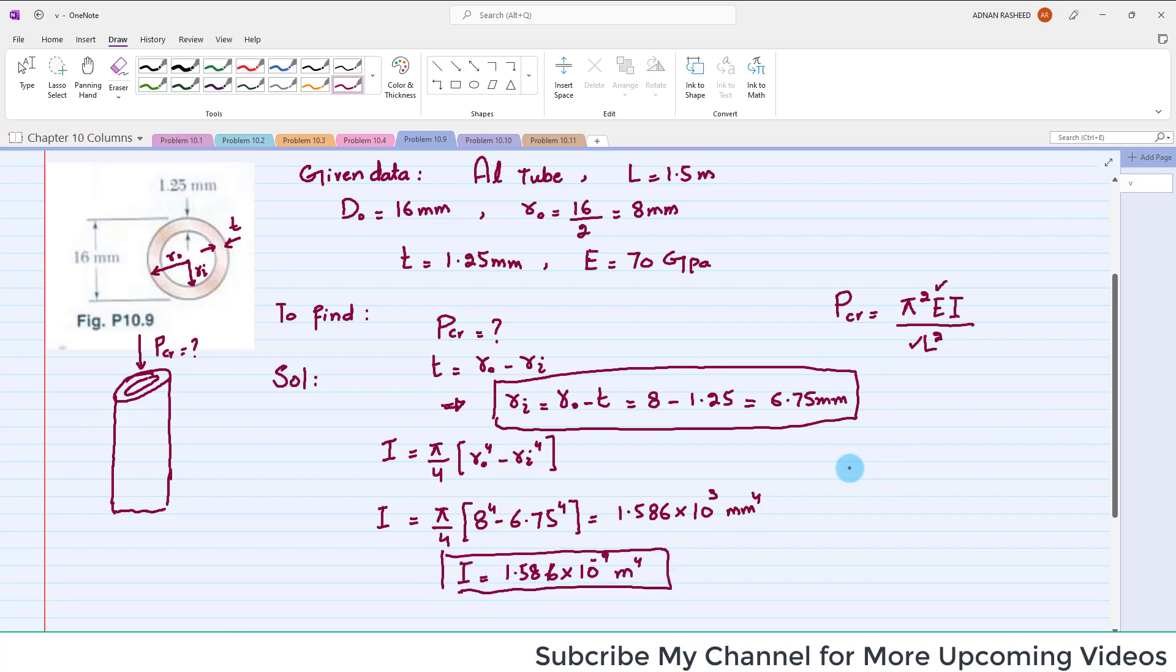Now you have the I value, you can put it in the formula of critical loading. P critical is equal to pi squared, pi is 3.14, times E is 70 gigapascals, so 70 times 10 to the power 9 pascals, times I, which is 1.586 times 10 to the power minus 9, divided by L squared.